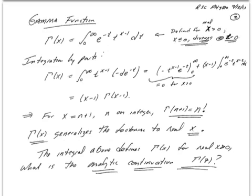Let's take a particular example: the function gamma of x. Gamma of x is defined as the integral from 0 to infinity of e to the minus t times t to the x minus 1 dt. It's defined for any real value of x greater than 0. If we take x equal to 0, the t to the 0 minus 1 term causes it to diverge. So the only problem with this representation of the gamma function, at least for real values of x, is that it diverges for any x less than or equal to 0.